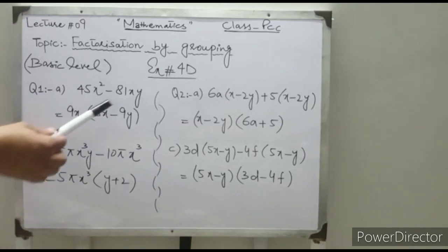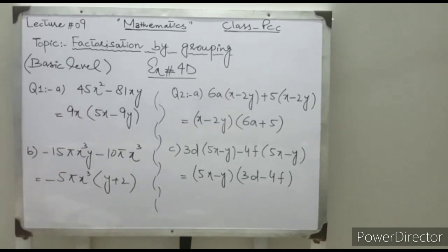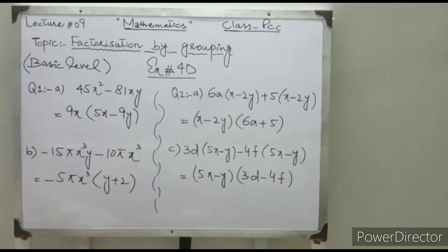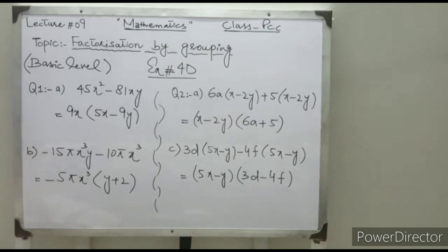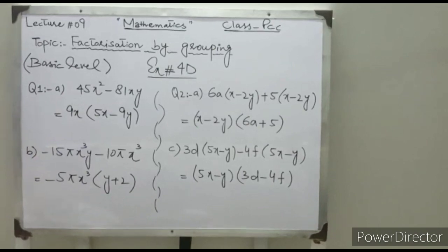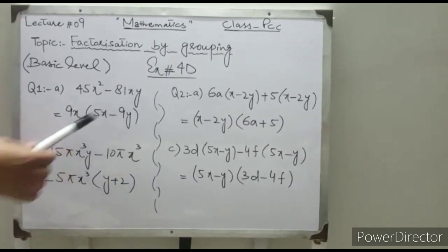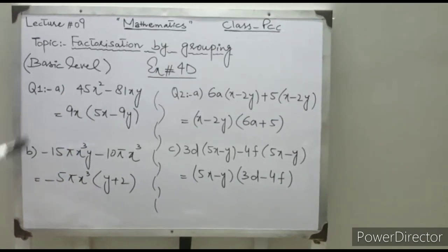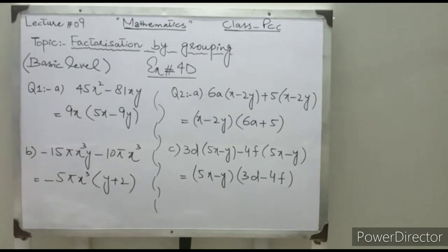In this expression we have the number 9 as well as the variable x as common factors. First of all, take 9x common. The remaining expression is 5x minus 9y. This is the factorization of this question just by taking 9x common.